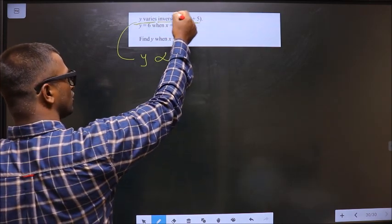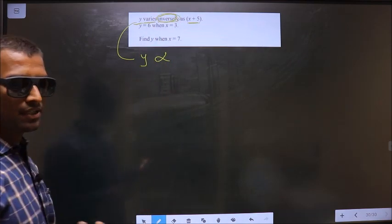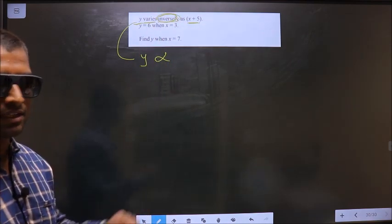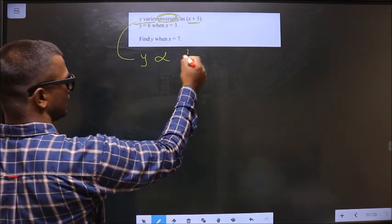Now here you see, he has also specified inversely. So whenever inversely is specified, we write that in the denominator, which is here.